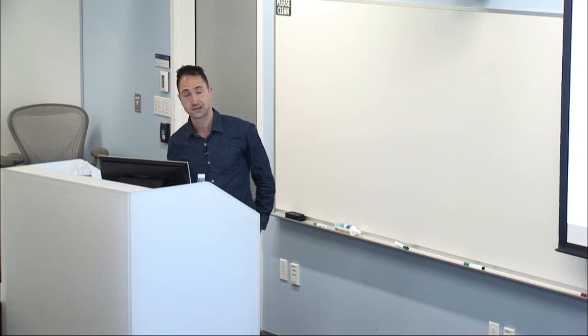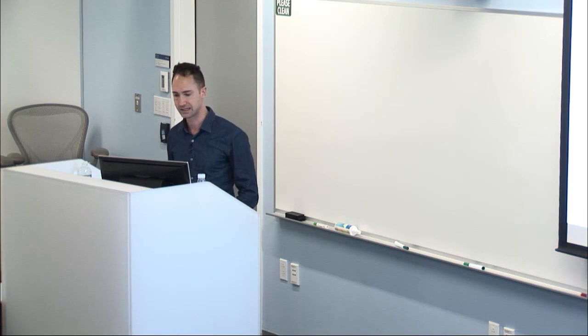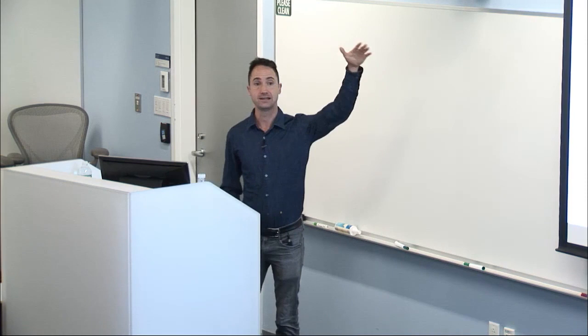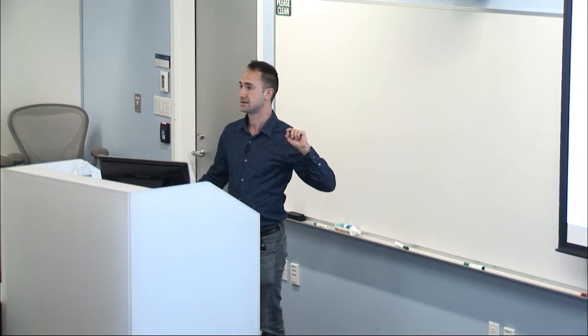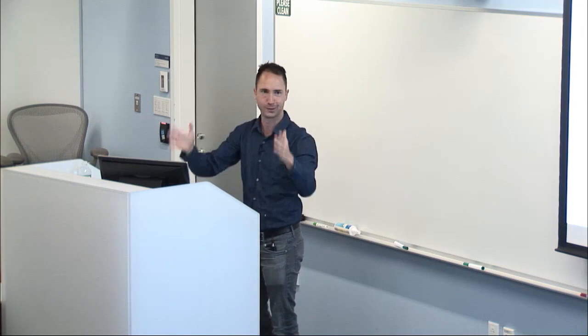This is called Pandora's box model, due to Marty Weitzman at Harvard (1979). There is a finite set of options, each with its own payoff distribution F_i and its own cost C_i to open. Every box can be different—I know this box will give me this kind of payoffs, that box gives me those payoffs. The key assumption is that payoffs are IID across boxes: if I open box one and discover a school in Medford is not so great, I don't update on the other boxes at all.